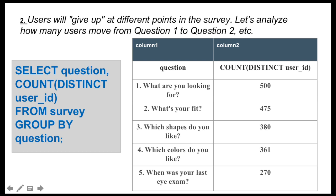So we see 500 people answered what are you looking for, 475 answered their fit, 380 answered what shapes they like, 361 answered what colors, and 270 answered when their last eye exam was. So see the numbers dwindling, people aren't completely completing the survey.